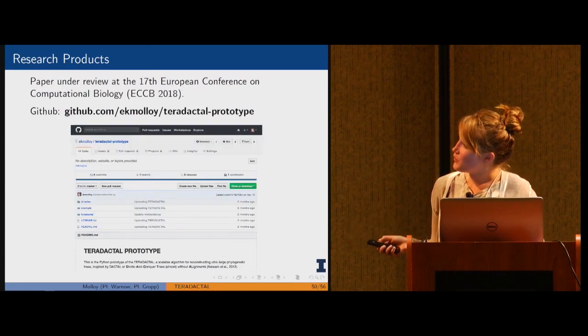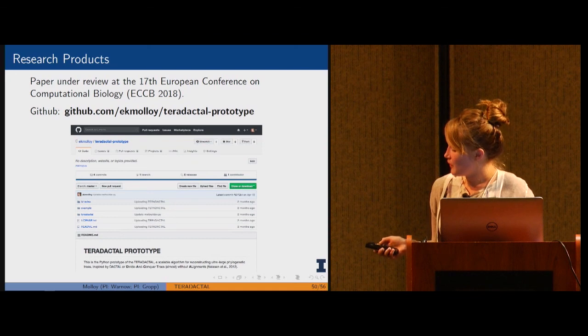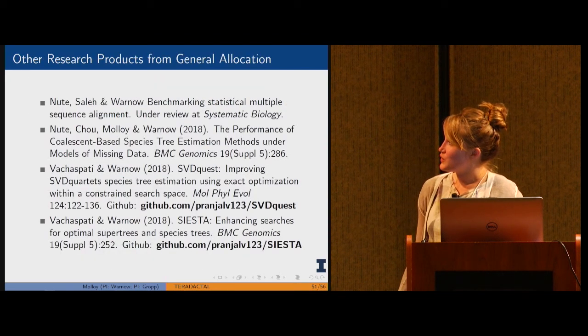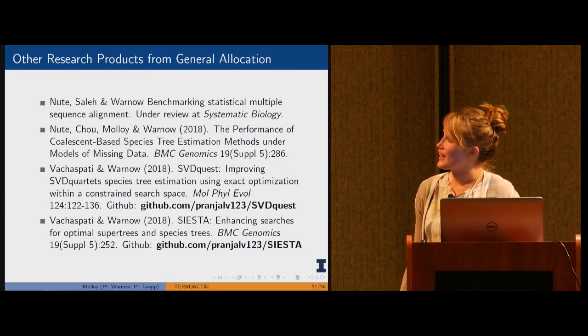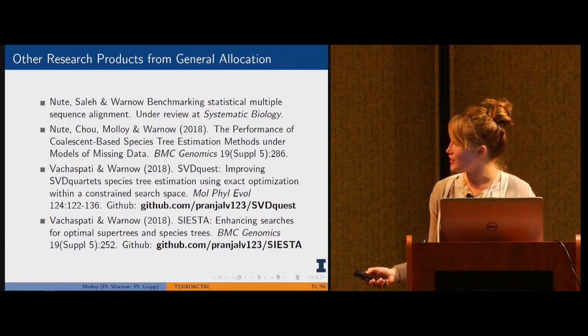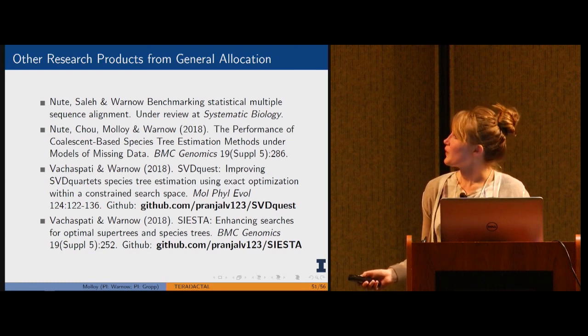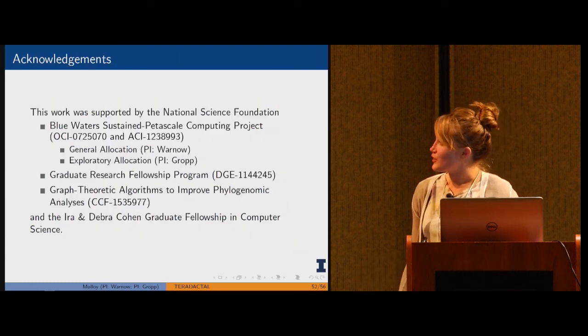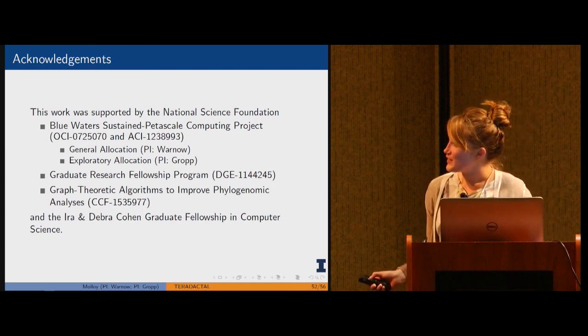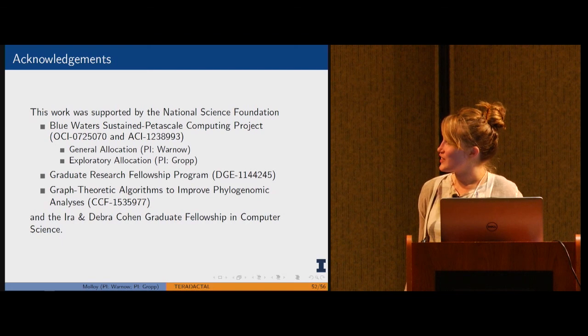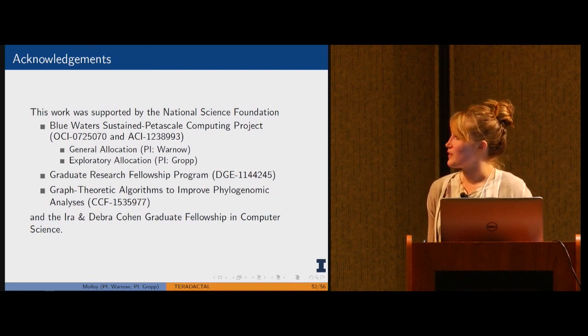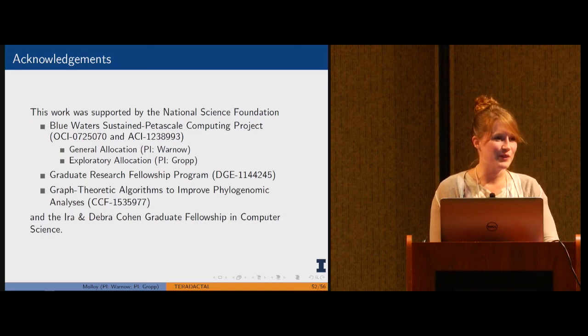The code, we have a paper under review and the code is already freely available on GitHub. Just to add, this used just a small part of a general allocation. There were a lot of other research products under that allocation as well. In summary, I'd like to acknowledge my two advisors, Tandy Warnow and Bill Gropp. Note again that this project used two allocations and that I've been supported by the National Science Foundation as well as the Cohen Graduate Fellowship in Computer Science.